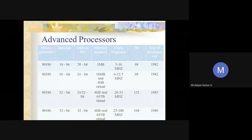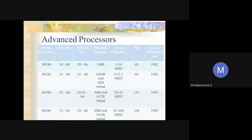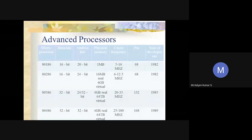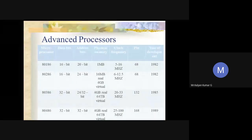We are going to discuss these basic processors: 80186, 80286, 80386, and 80486. After 486, the Pentium processor family comes into existence. We'll see each one in detail. The 80186 and 286 both have a 16-bit data bus, similar to the 8086, whereas 80386 and 486 have a 32-bit data bus.